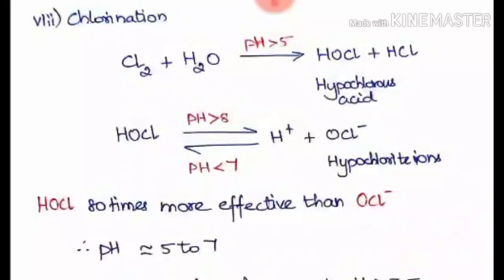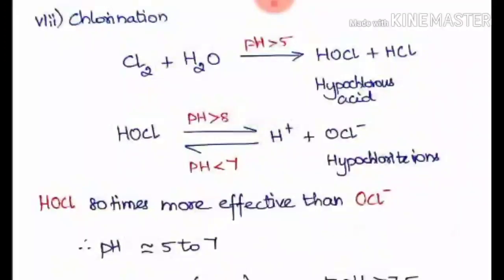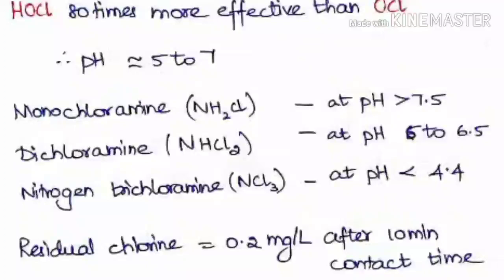If we sustain hypochlorous acid in the water the disinfection process will be more effective. By maintaining the pH in the range of 5 to 7, the dissociation of HOCl can be controlled to a greater extent so that the disinfection process can be done completely. Chlorine also reacts with ammonia present in the water and gives various products.